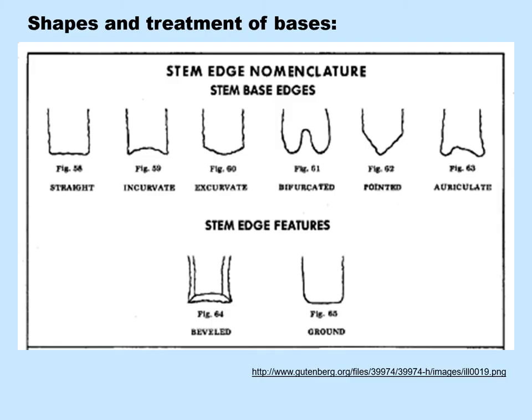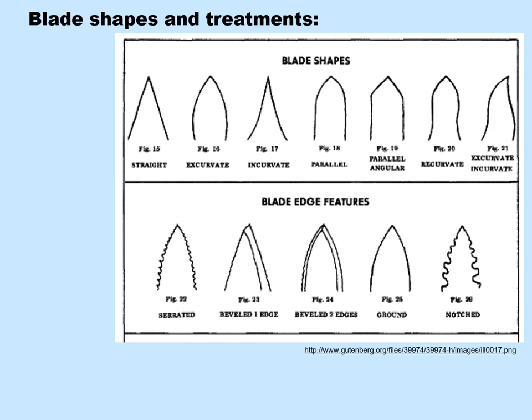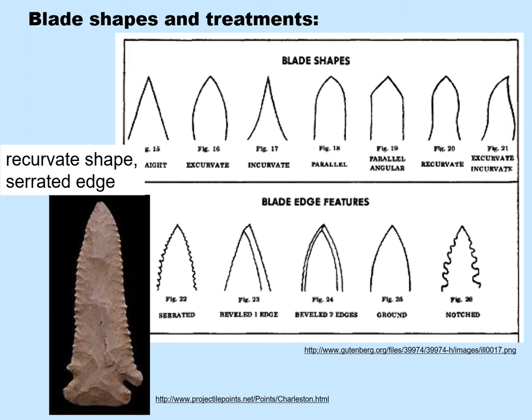You may also look at the shapes of bases as well as the treatment of the bases — for example, whether they were ground or beveled. We additionally often look at the blade shape and the treatment of that edge. Here, for example, is a recurvate shape and a serrated edge.